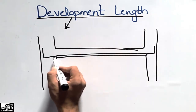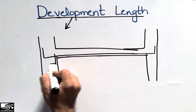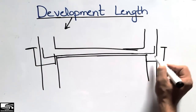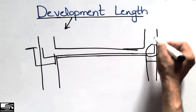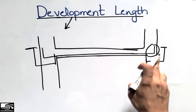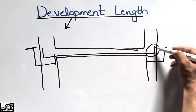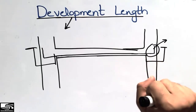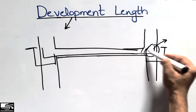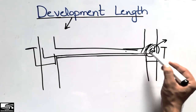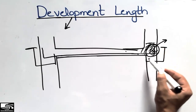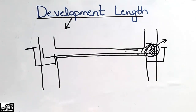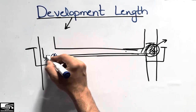The development length can be defined as the length of reinforcement — from here to here — that is embedded or extended into the column. This bending length of reinforcement in the column is called the development length. It is the length embedded from one member into another to strengthen the bond between the two members, and the load is transferred from the beam into the column through this reinforcement.